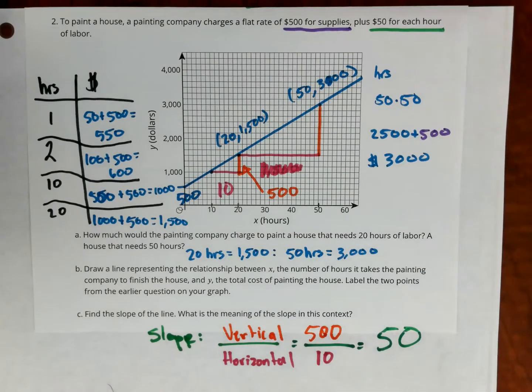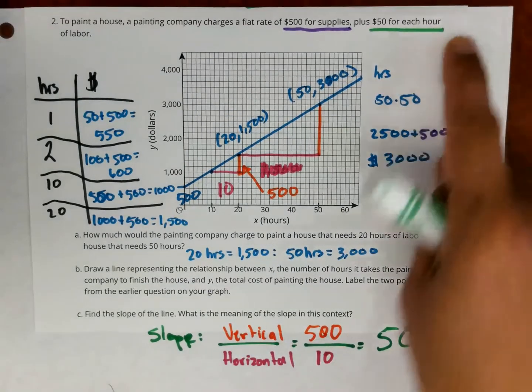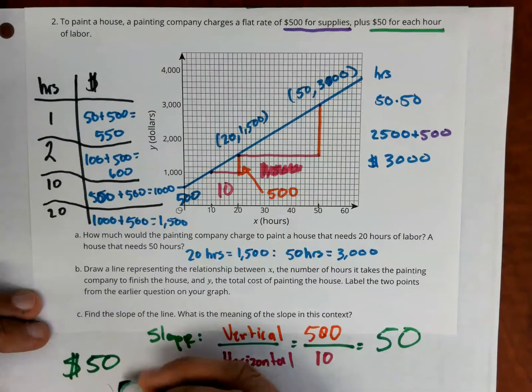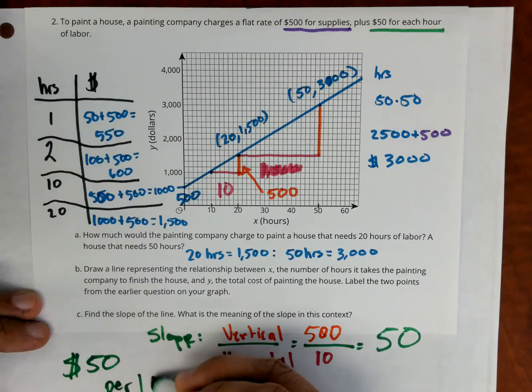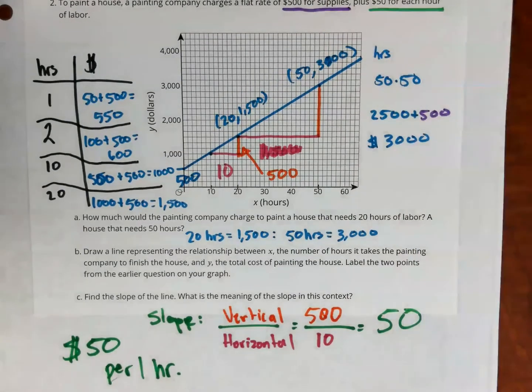Now, the second part of the problem is what is the meaning of the slope in this context? The number 50 should look familiar to something in the problem. 50 is the amount of dollars per hour. So that's what the slope means in this context, $50 per one hour. The slope means $50 in one hour. That's how much the company charges, $50 per hour. Alright, thank you, ladies and gentlemen.